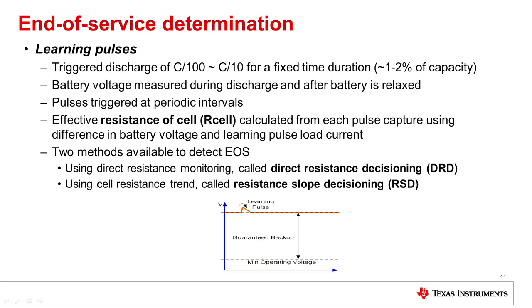The learning pulses use a discharge level on the order of C/100 to C/10 for a short time duration, discharging a limited amount of capacity — typically one to two percent. The device monitors the voltage, current, and temperature of the cell during the entire relaxation period, during the discharge, and during the post-relaxation. These pulses are triggered periodically — once a month or once every few weeks. From each learning pulse, we calculate a resistance of the cell, called an R cell. We store that value into the device and then analyze the R cell values and their trend over time to determine whether the cell is approaching the end of its usable life.